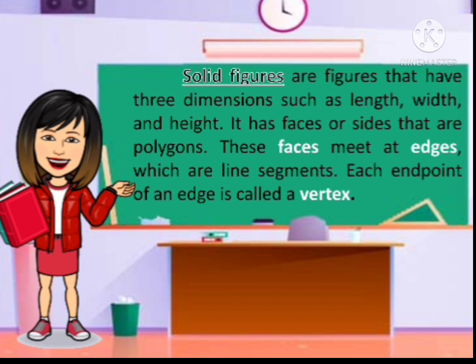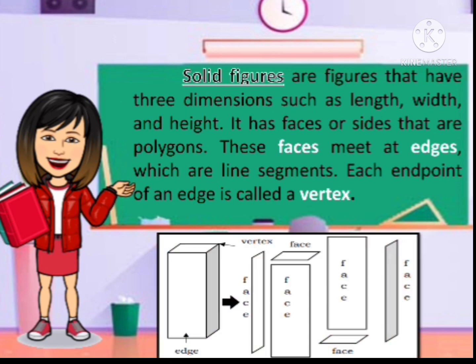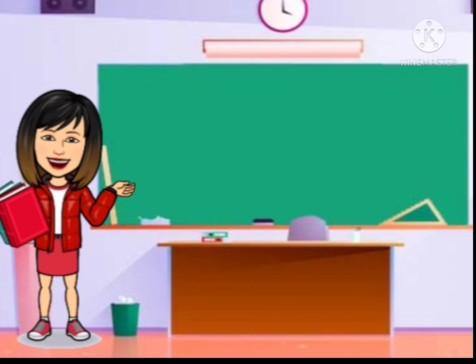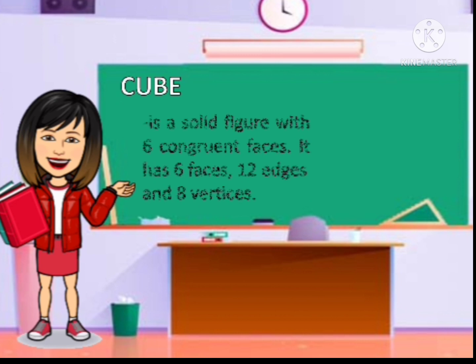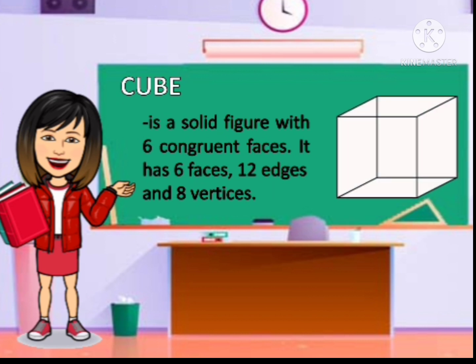Solid figures are figures that have three dimensions such as length, width, and height. They have faces or sides that are polygons. These faces meet at edges, which are line segments. Each point of an edge is called a vertex. A cube is a solid figure with six congruent faces. It has six faces, 12 edges, and eight vertices.